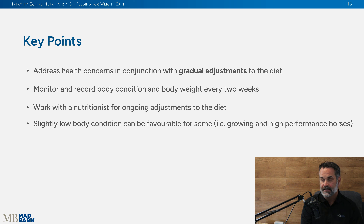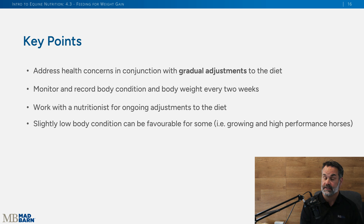Keep in mind that a body condition score of four or four and a half is commonly seen in high-performance horses and growing horses, so they may not always be able to reach that ideal five. Overall, it doesn't have to be drastic or traumatic changes to put weight on a horse — you can add simple things to a feed bucket to encourage weight gain while addressing all of the factors we discussed. Take care.